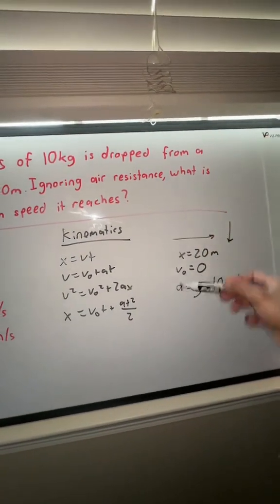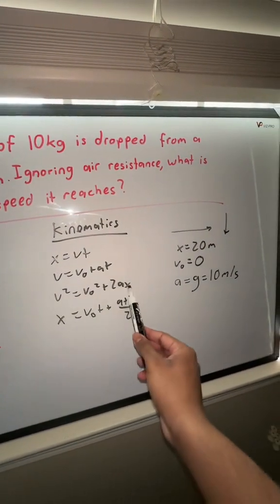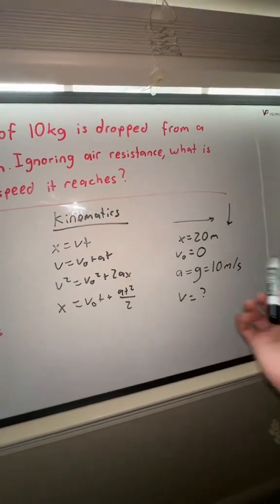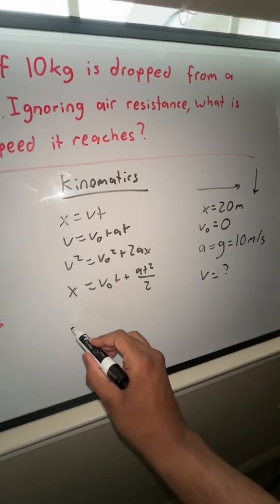Look what we have: x, v₀, and a. Which one can we use? We can use this one right here because this is what we're looking for: final velocity. So x, v₀, a, and v—this is the best one: v² = v₀² + 2ax.